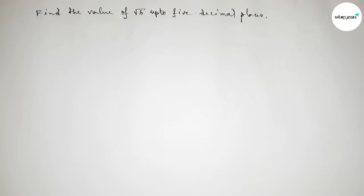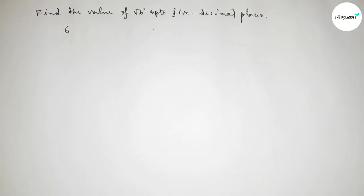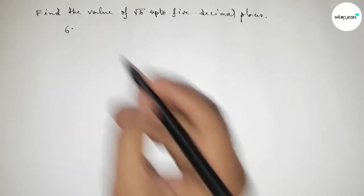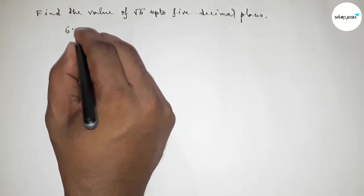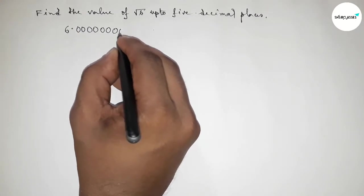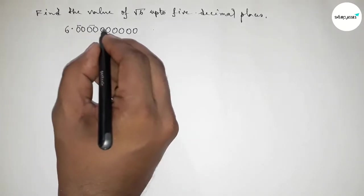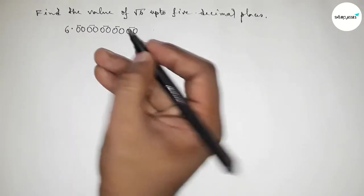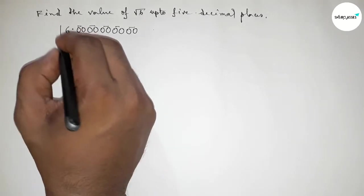First of all, write here the number 6. Now we can put a decimal point. For up to 5 decimal places, we have to write 10 zeros. Making them as pairs, taking 2 zeros as a pair, so we get 5 pairs of zeros.